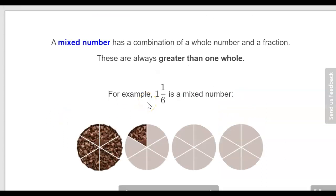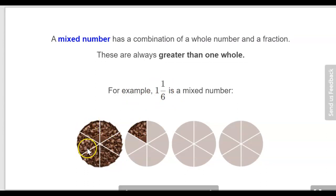The third type of fraction that we have is a mixed number. A mixed number is a combination of a whole number and a fraction, and these will also always be greater than one. They've given an example of a mixed number of one and one sixth. You can see here's our one whole and then one sixth represents one part of six of this other shape.